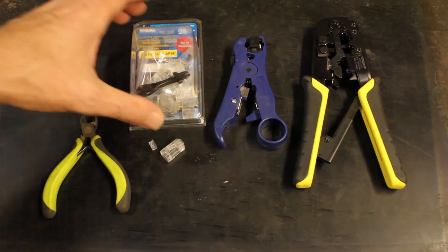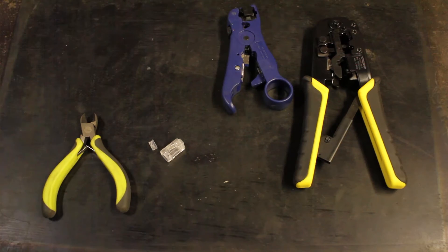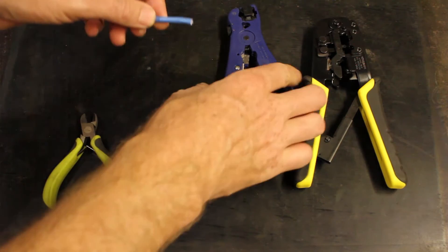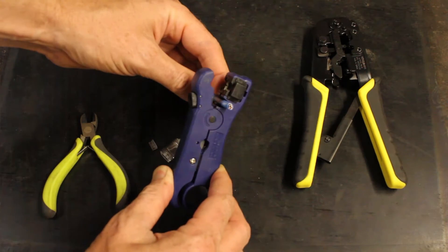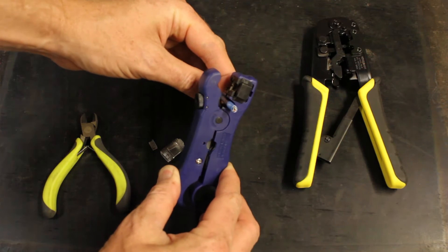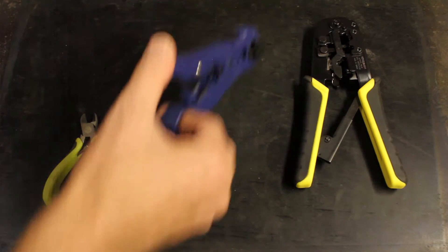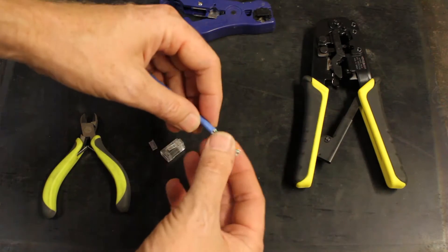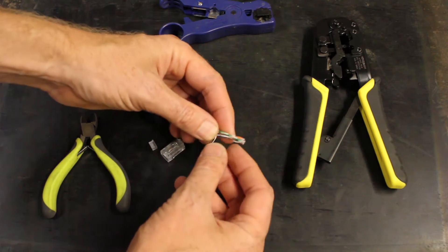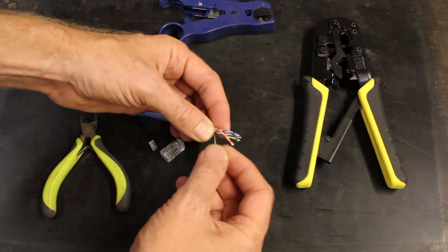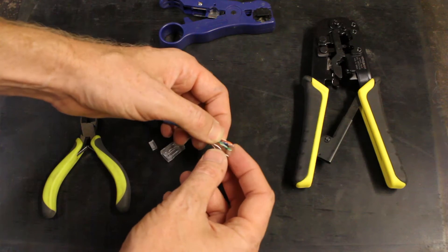So basically what we're going to do is strip this end down here. And I like to give myself about an inch. There we go. So you strip it down and you have all these stranded pairs here.